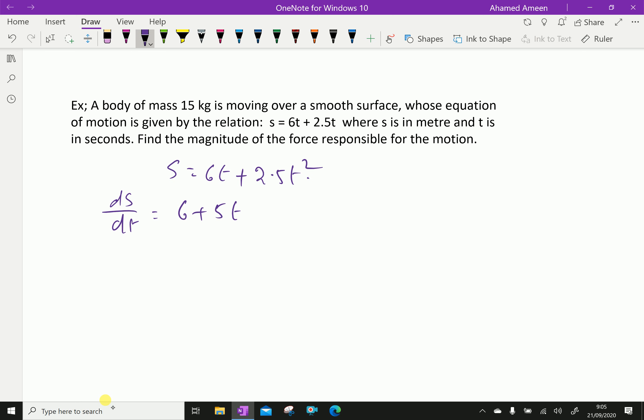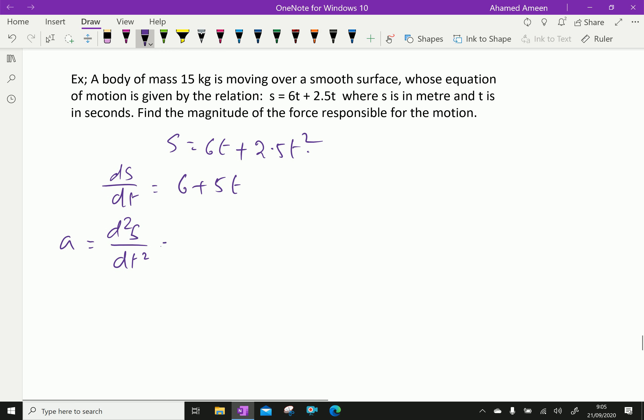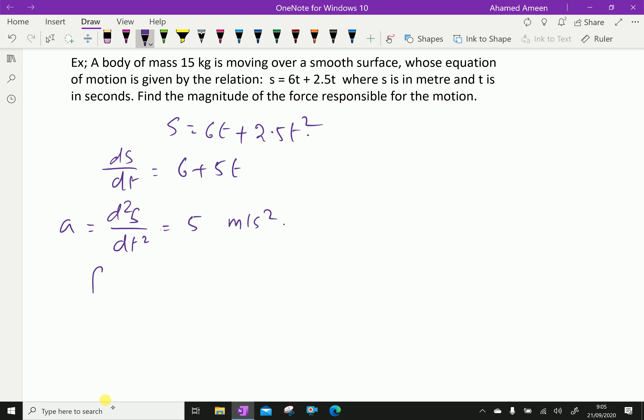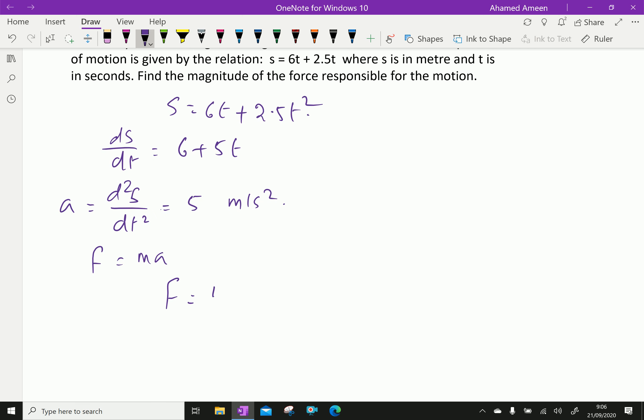This is velocity. Further differentiation: d squared S over dt squared, which is acceleration, equals 5 meter per second squared. Force responsible for this motion: F equals MA. F equals mass 15 kg times 5, which equals 75 Newton.